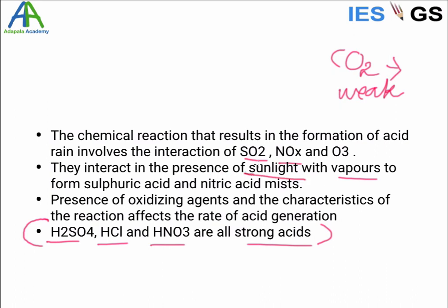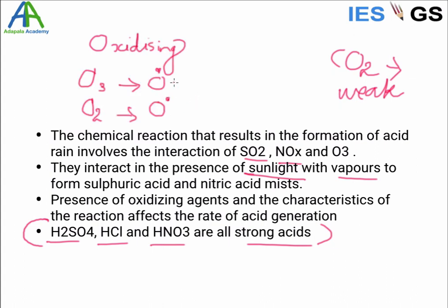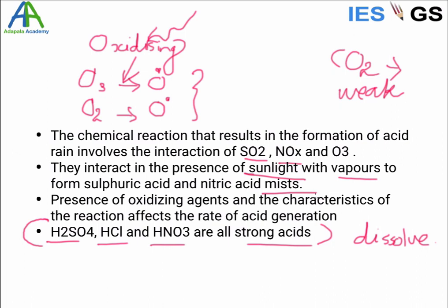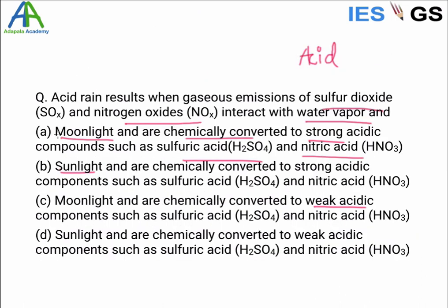Sunlight provides oxidizing agents — oxygen radicals that are strong oxidizing agents — which help in the reaction. These are photochemical reactions requiring sunlight. Water vapor dissolves these strong acids, which easily dissolve in water. Therefore, the answer is not moonlight — sunlight is required. The gases are chemically converted to strong acids such as sulfuric acid and nitric acid. That is the correct answer.